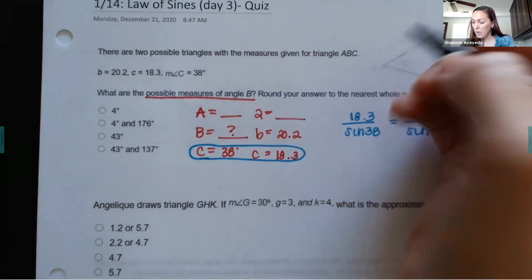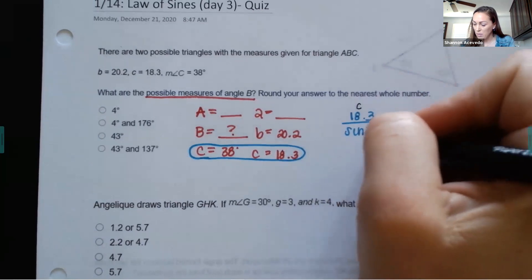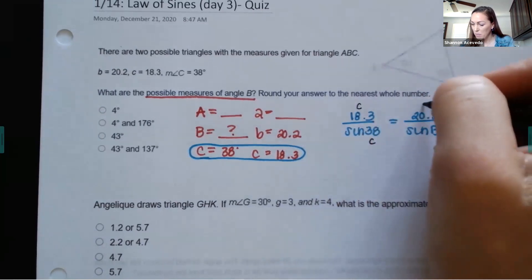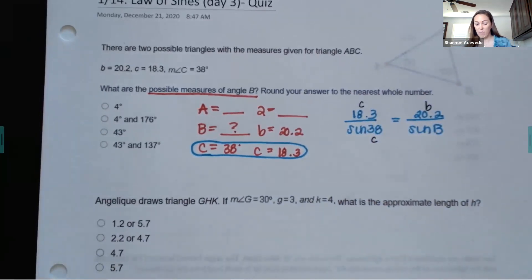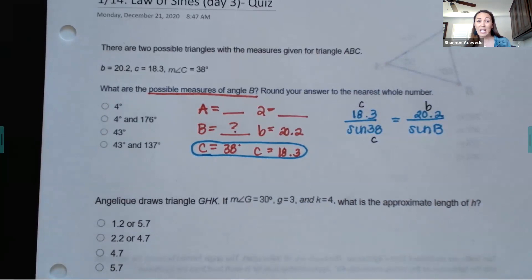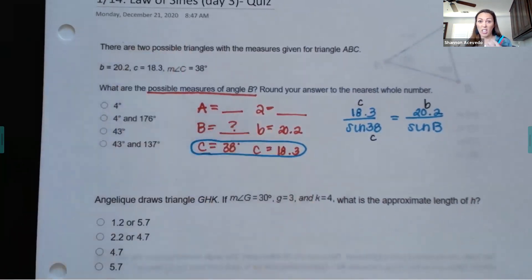This is my side C, this is my angle C, and this is my side B — I'm looking for sine of B. It says what are the possible measures of B, and they said there are two possible triangles, so that's a big clue right there: look for two angles.